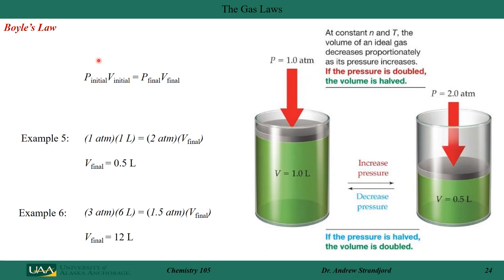Using Boyle's law: if I take a gas at one liter and one atmosphere and increase the pressure to 2 atmospheres, the final volume is 0.5 liters. In a second example, if a gas is at 3 atmospheres with a volume of 6 liters and I reduce the pressure to 1.5 atmospheres, the volume increases to 12 liters.